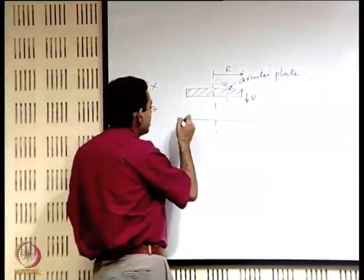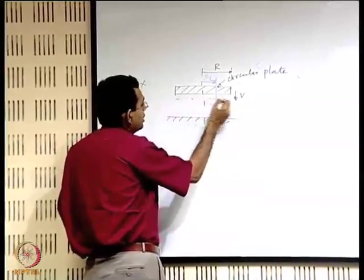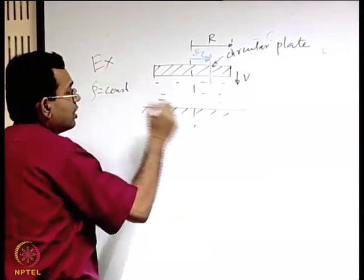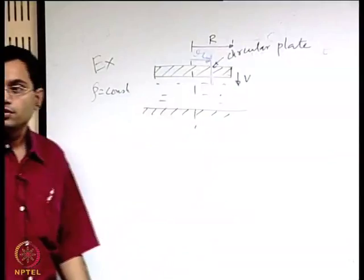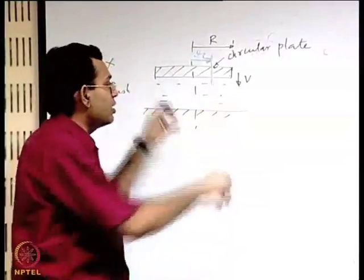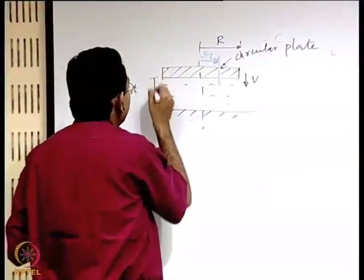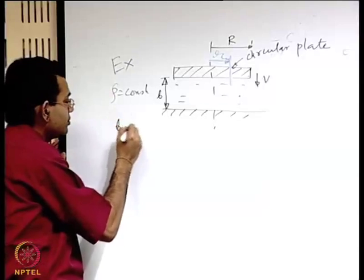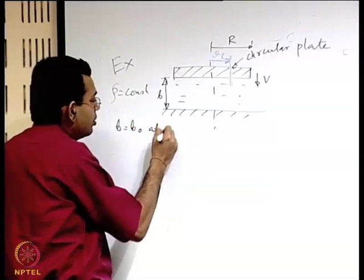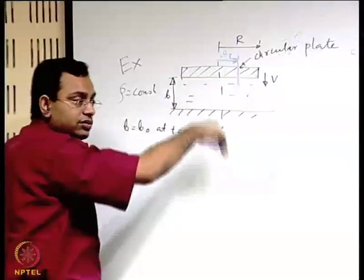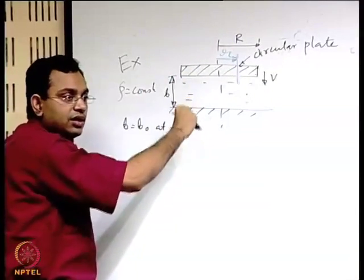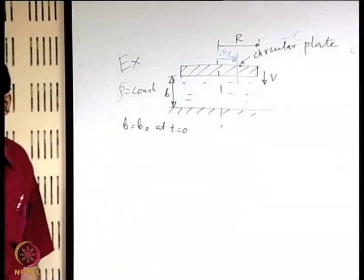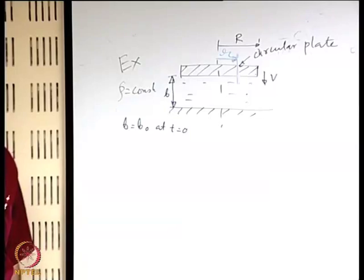There is water with ρ = constant between the plates. As the top plate comes down, the gap b decreases from b₀ at t = 0. Water is squeezed out radially to maintain continuity. We are interested in finding how pressure varies with r.